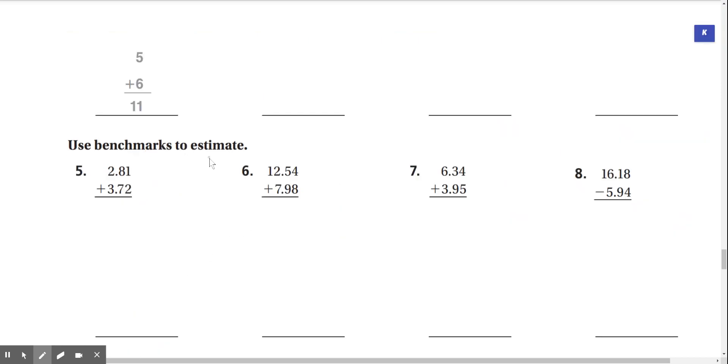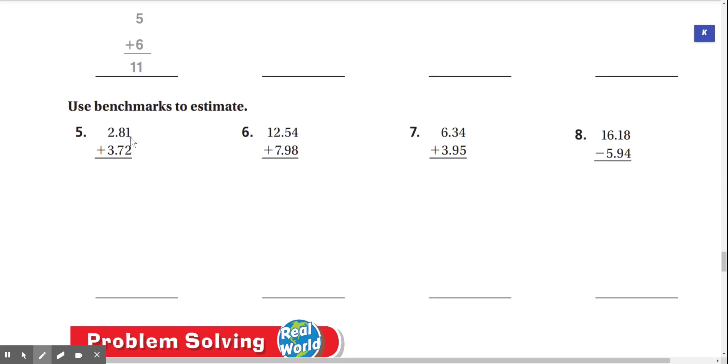Use benchmarks to estimate. Number five, 2.81 plus 3.72. Well, we know that on a number line, 2.81 is very close to 3, and 3.72 is really close to 4. So 3 plus 4 is just 7.